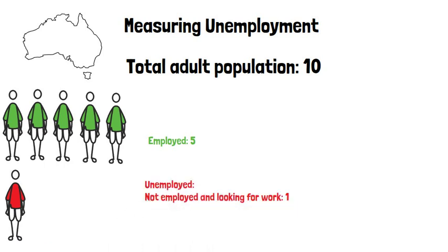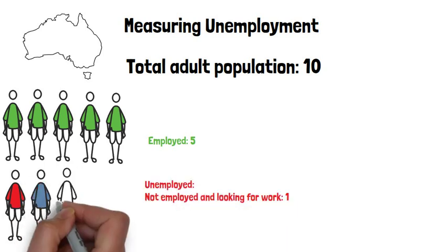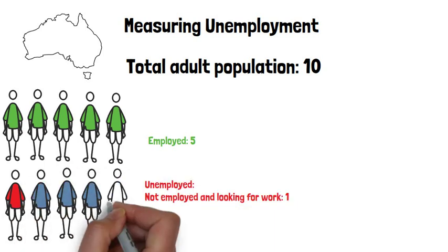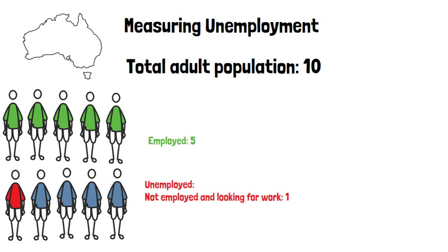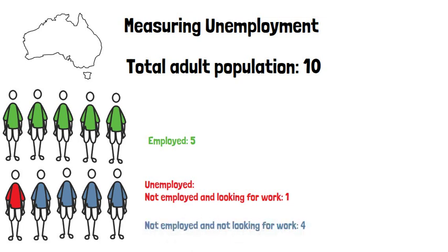The other four people are also not employed, but they are not actively looking for paid work. These people may be students, retired, or they may be taking care of family.